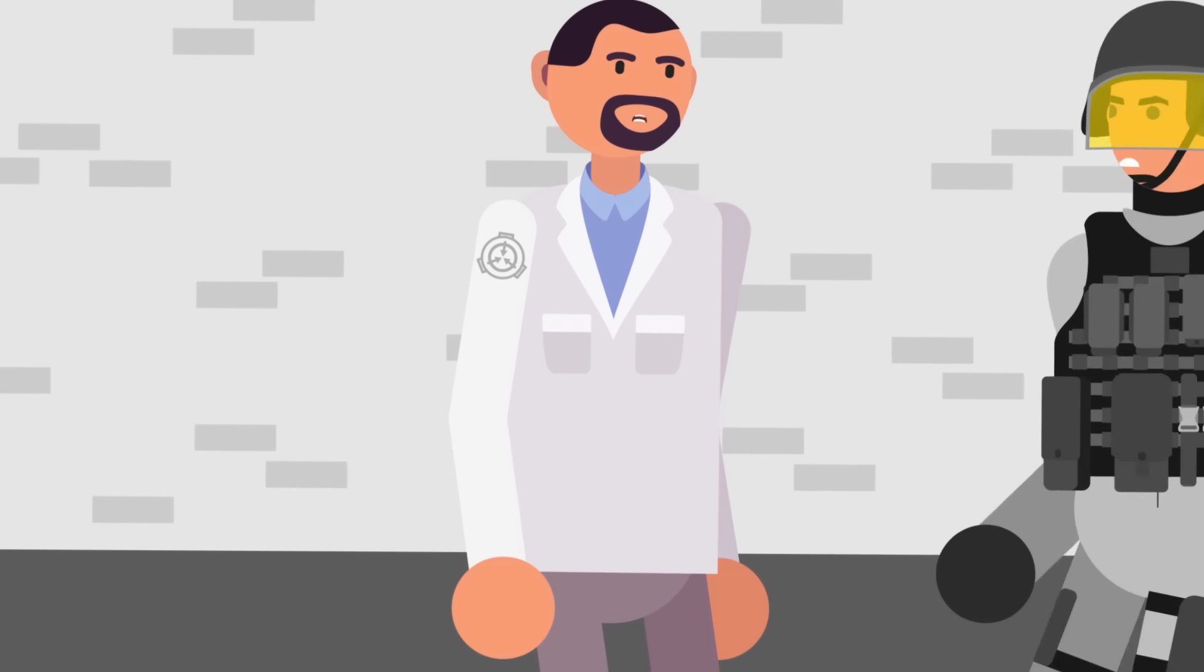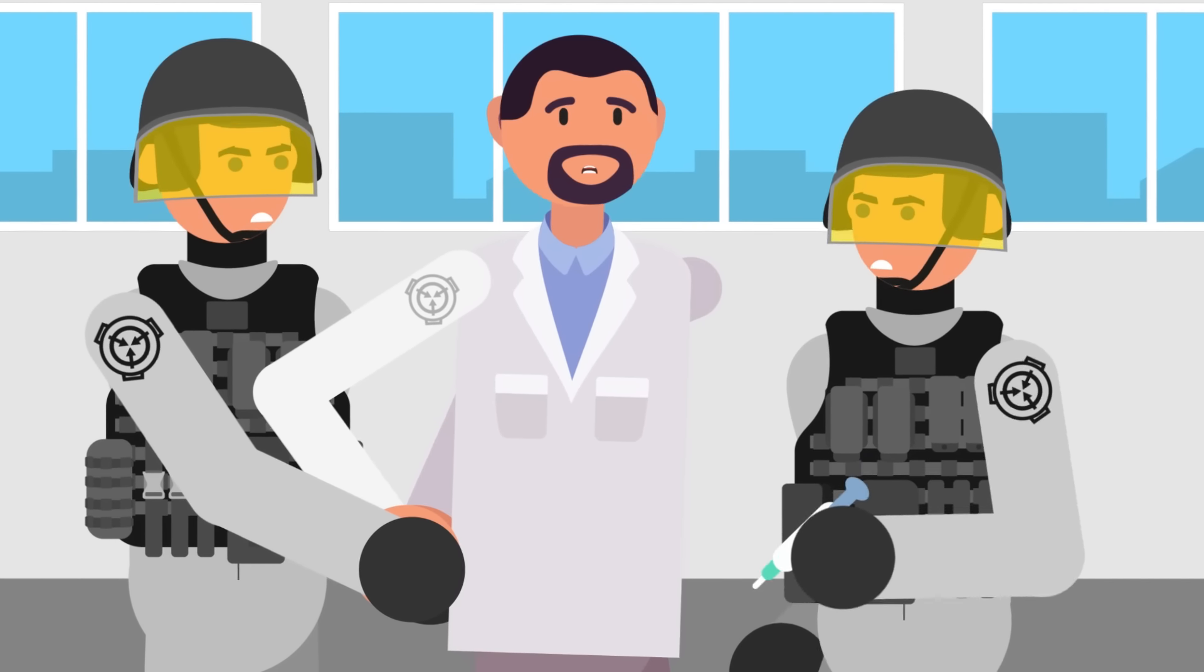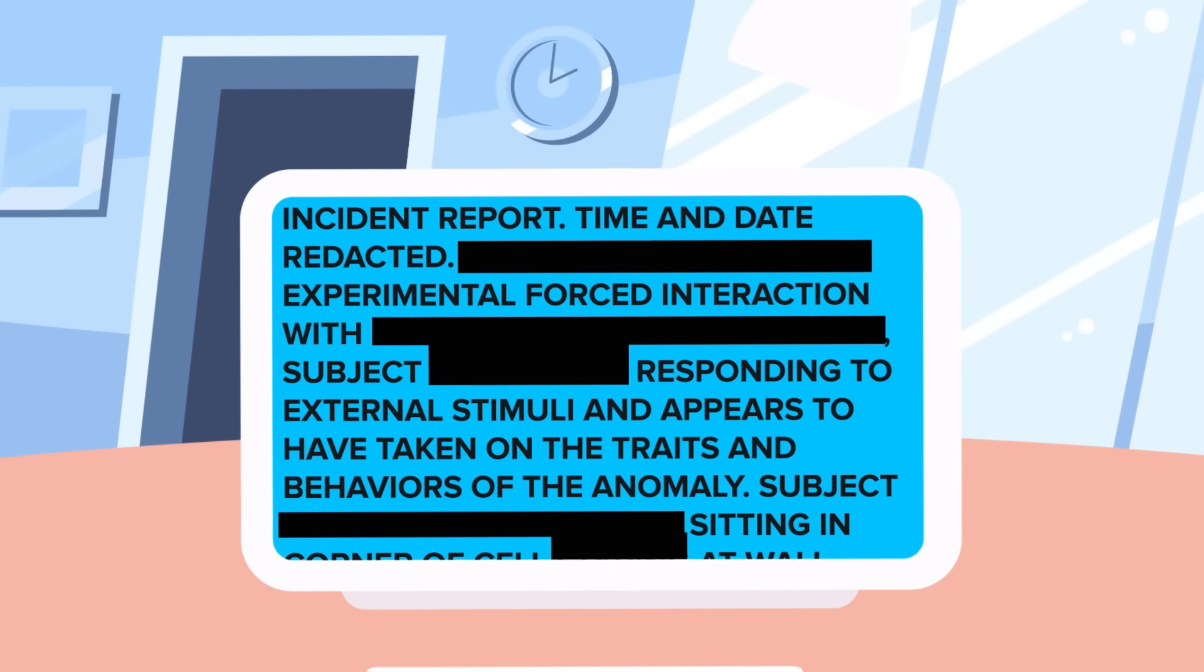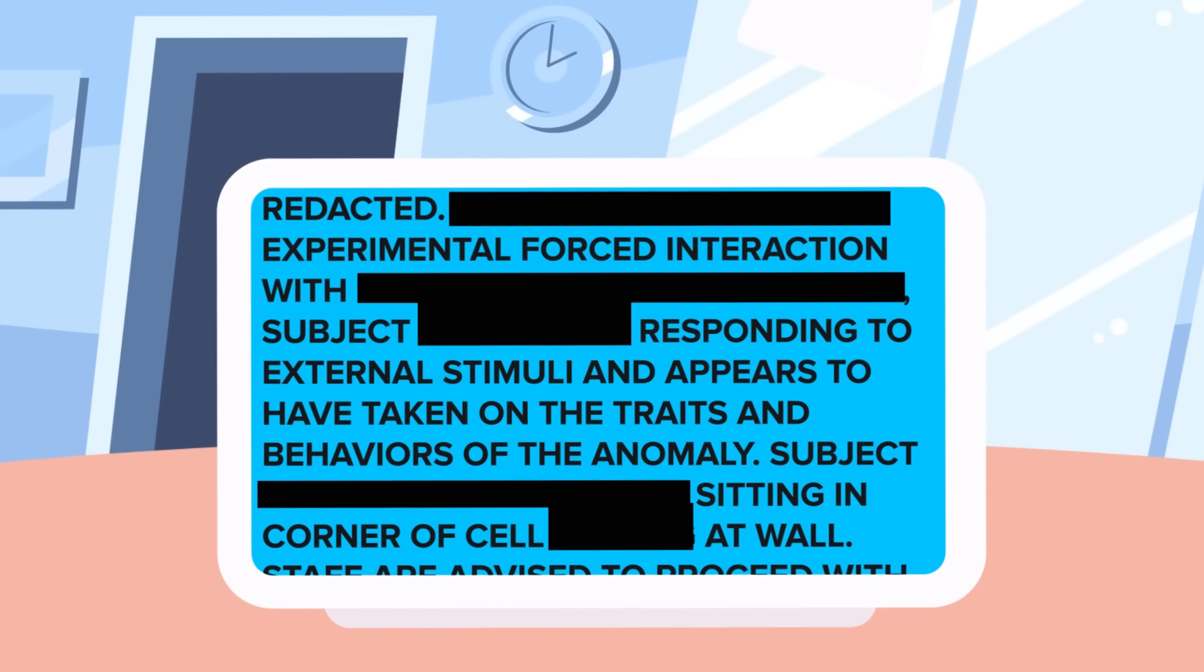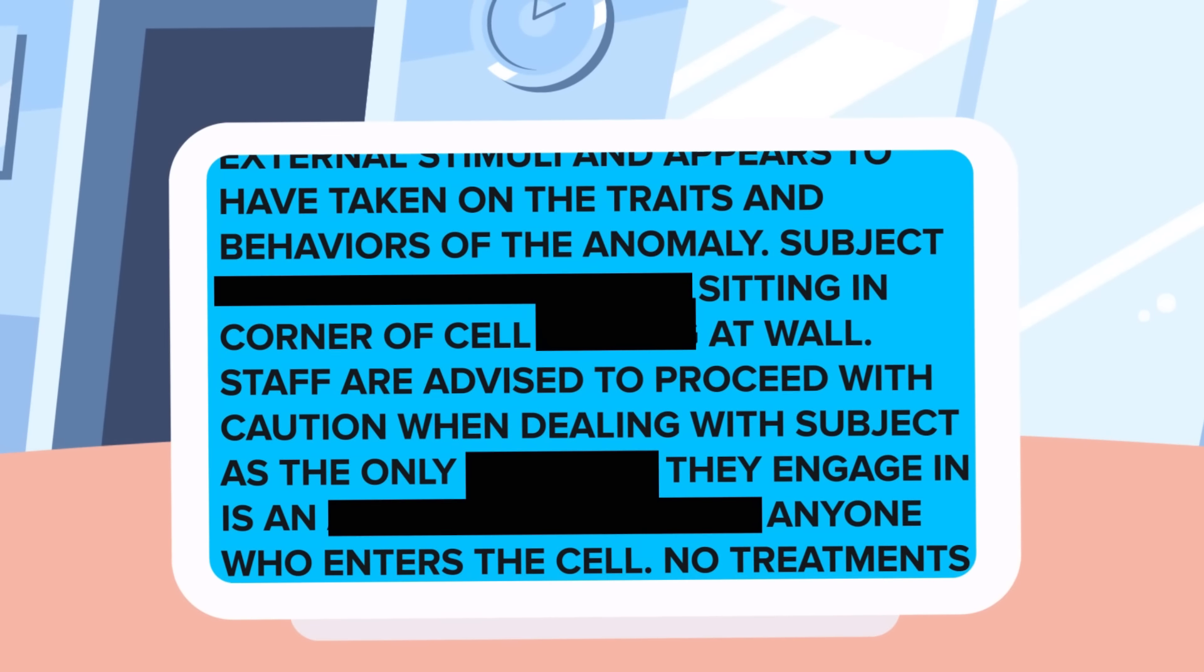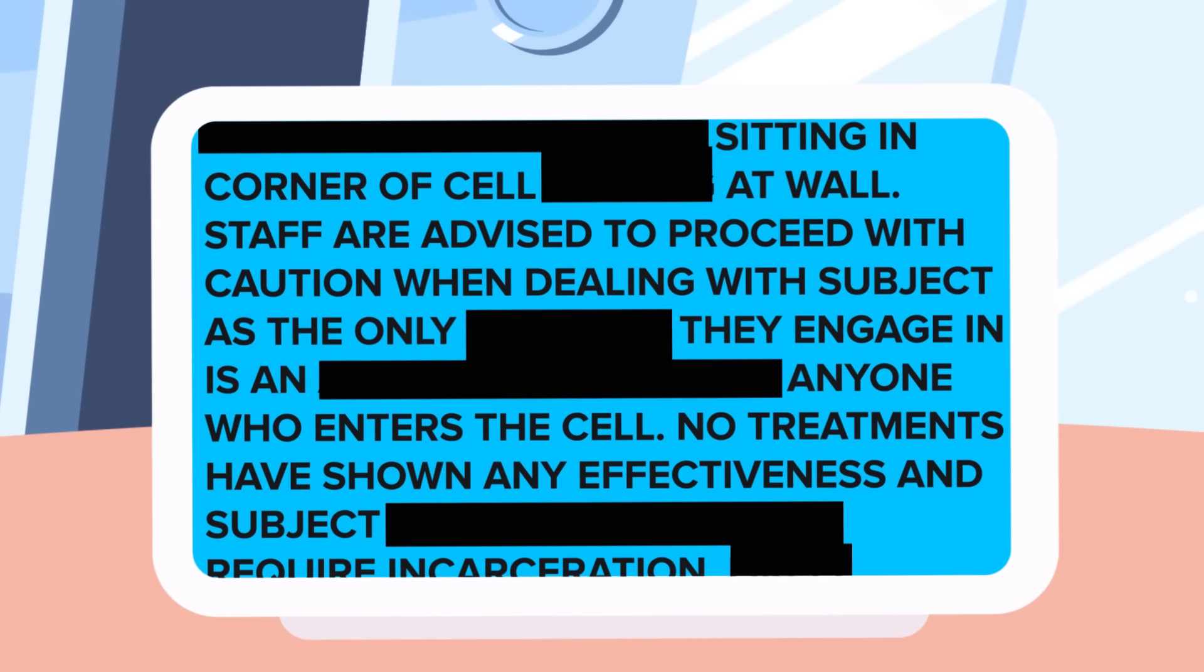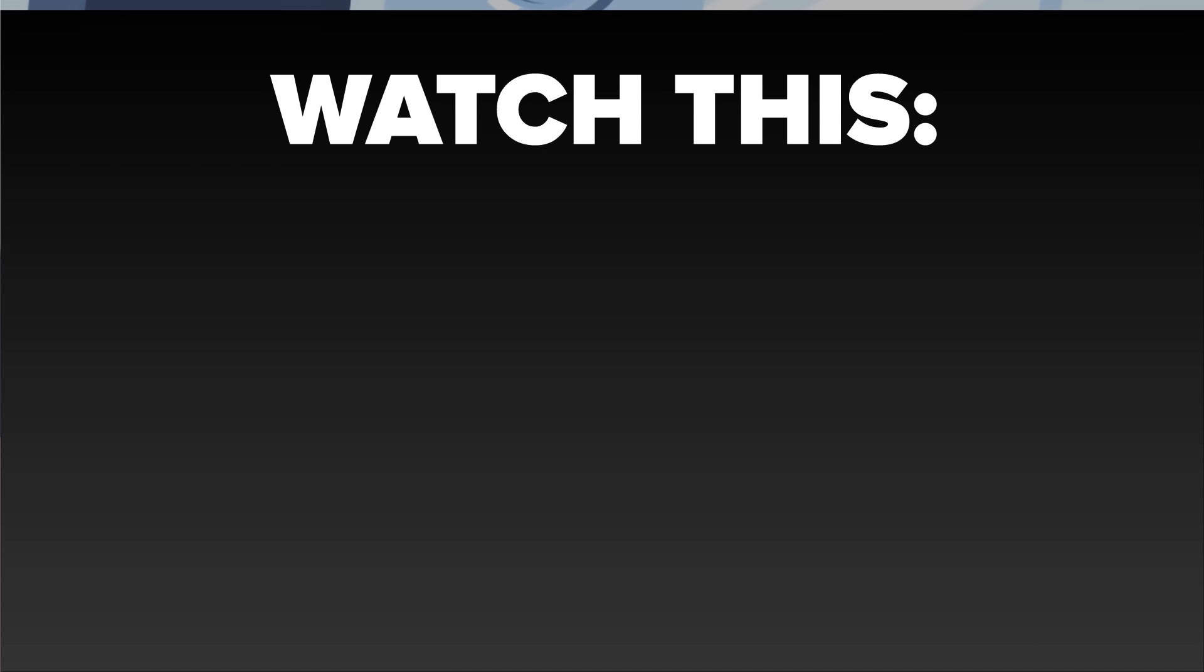My eyes popped open as the door opened and in rushed six security personnel. They took me outside. Jabbed my leg with a syringe, injecting me with something as the world faded away. Incident report. Time and date redacted. Following the experimental forced interaction with Euclid-class anomaly SCP-173, subject has ceased responding to external stimuli and appears to have taken on the traits and behaviors of the anomaly. Subject now spends entire day sitting in a corner of a cell staring at the wall. Staff are advised to proceed with caution when dealing with subject, as the only behavior they engage in is an attempt to strangle anyone who enters the cell. No treatments have shown any effectiveness, and subject will unfortunately require incarceration, likely forever. This report has been read and approved by Redacted, Redacted, and Dr. Siegfried Schwarz.